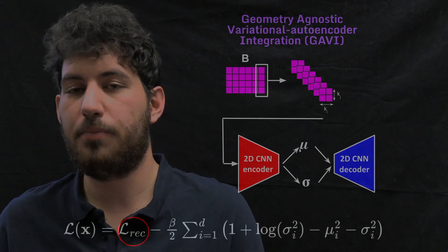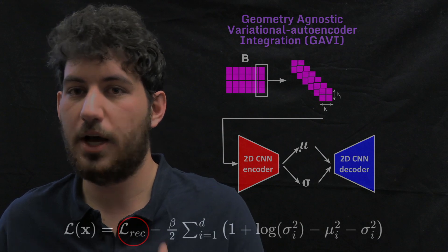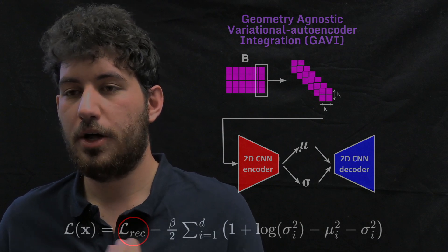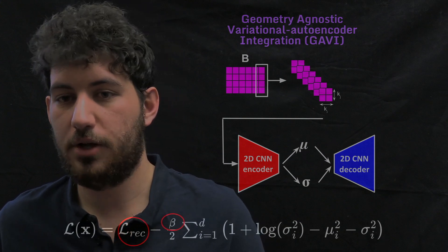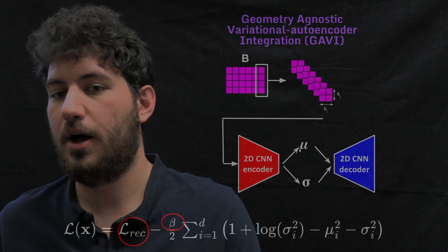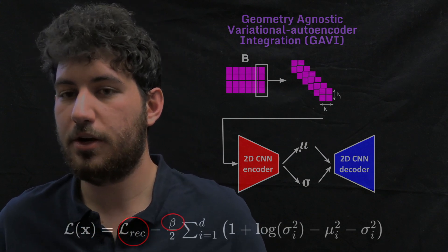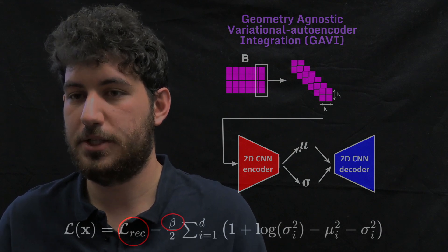And then we have the KL divergence loss. We want to impose some disentanglement in the latent space to recover latent vectors that are equivalent to the POD coefficients. So we actually focus on having this beta parameter here to impose this latent space disentanglement.